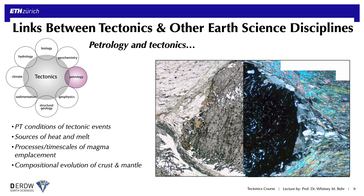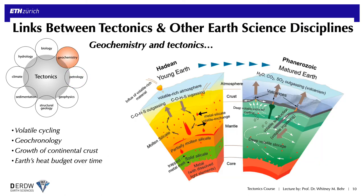Metamorphic petrology, which we'll discuss specifically in an upcoming module, is essential to understanding pressure-temperature conditions of tectonic events, the sources of heat and melt, the processes and timescales of igneous province emplacement, and the compositional evolution of the crust. The closely linked discipline of geochemistry provides essential constraints on the sources and sinks of things like carbon, water, and other volatiles. Geochemistry also includes geochronology, which adds the fourth dimension of time to tectonic reconstructions, and allows us to probe the growth and destruction of continents and Earth's heat budget over time.